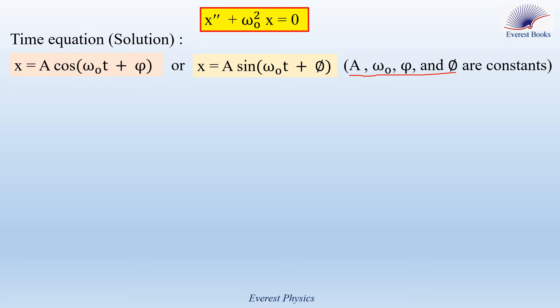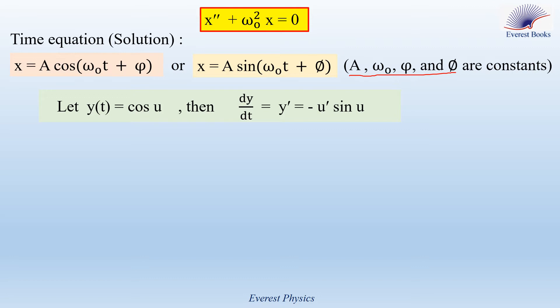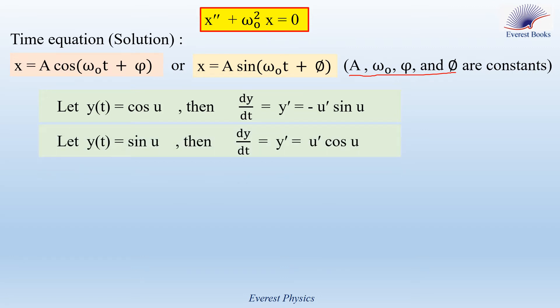Now, let me remind you of the derivative of cosine u. Let y(t) equal cosine u, then dy/dt, or y prime, equals minus u prime sine u. Also, let y(t) equal sine u, then dy/dt equals y prime, which equals u prime cosine u.